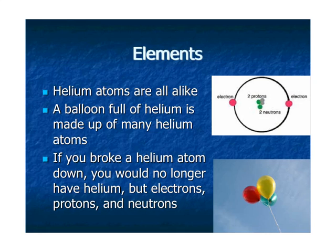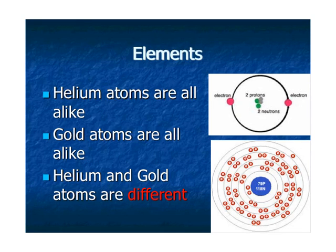Helium atoms are all alike, and a balloon full of helium is made up of many helium atoms. If you broke a helium atom down, you'd no longer have helium, but just a bunch of electrons, protons, and neutrons. So helium atoms are all alike, and gold atoms are all alike.